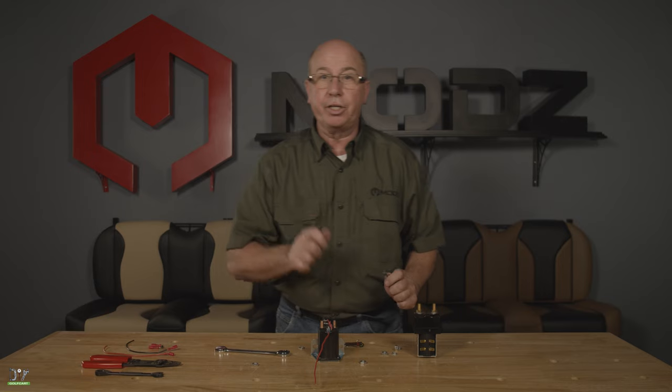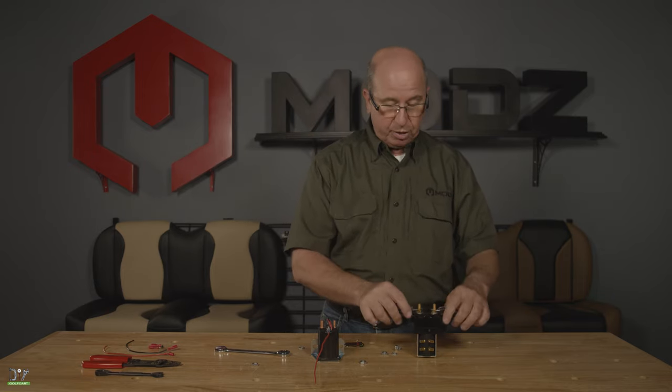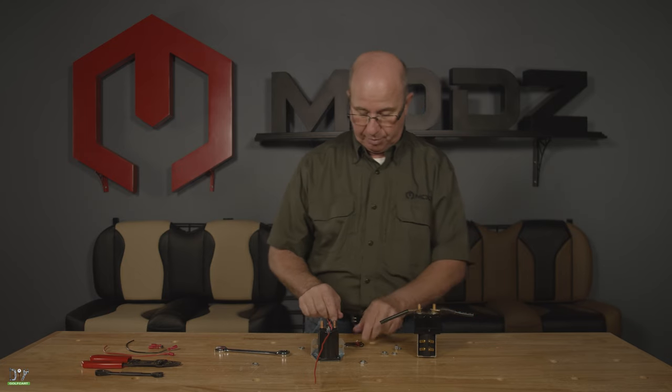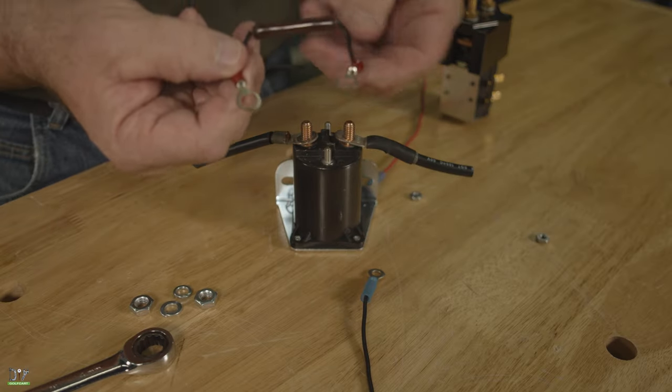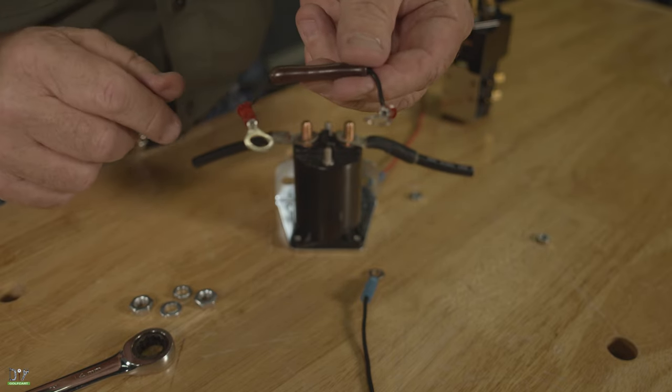So now in hooking up your heavy-duty ones, our large cables will mount the same way. They'll go on each side. Now our resistor can go in either direction. It is non-directional.